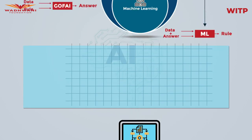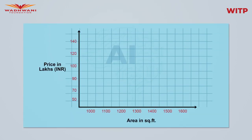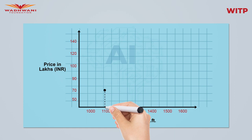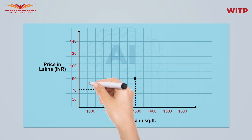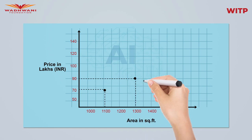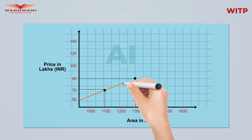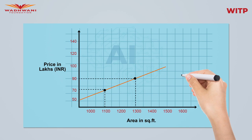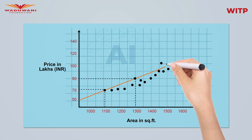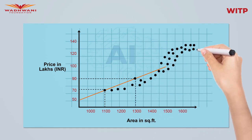Let's understand this with an example. Say we want to find the relationship between house prices and house area in New Delhi. We feed in some data — for house number one, this is the area and this is the price; similarly for house number two. With just these two points, our model may say there is a straight-line relationship between house area and house price in Delhi.